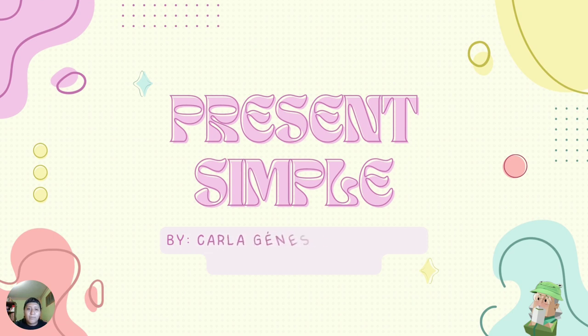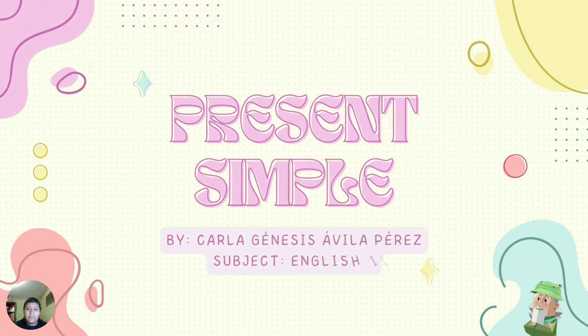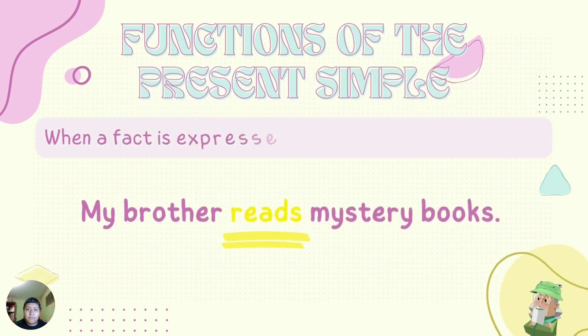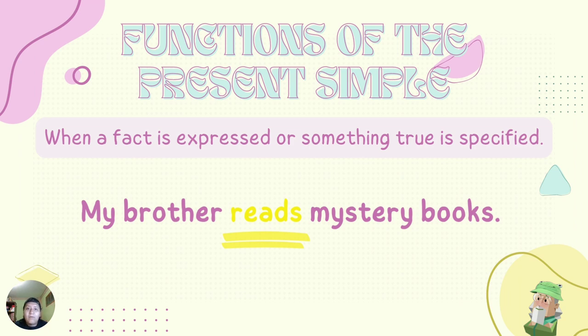Now, let's start. Present simple. Functions of the present simple. When a fact is expressed or something true is specified. For example, my brother reads mystery books. 'Reads' is our verb, in present simple.